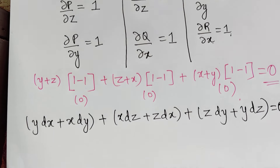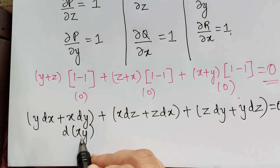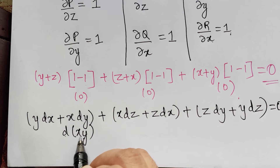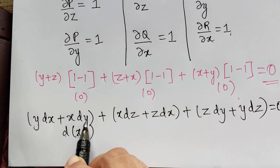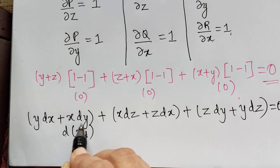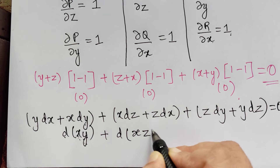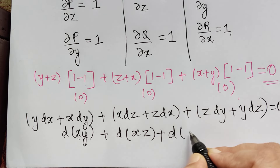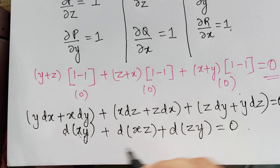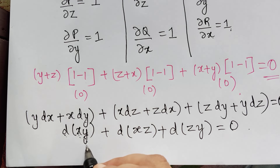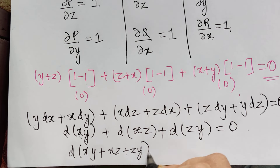Each group is recognized as an exact differential: y dx + x dy = d(xy), x dz + z dx = d(xz), and z dy + y dz = d(zy), applying the product rule. So the equation can be rewritten as d(xy) + d(xz) + d(zy) = 0, which combines to d(xy + xz + zy) = 0.